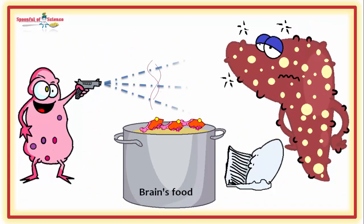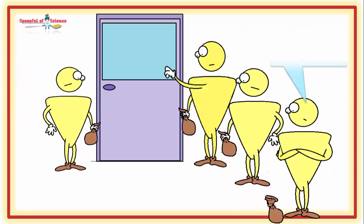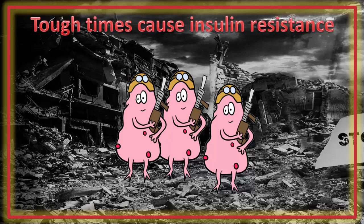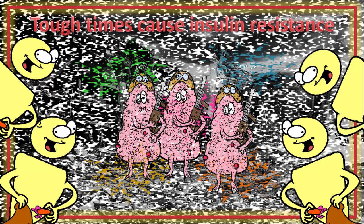Since war is inherently noisy, to make routine insulin deliveries, insulin must knock louder, which requires more insulin to be circulating. It's the tough times that are impeding sugar delivery. It's not insulin's fault. The poor little guy is doing his best under the circumstances.